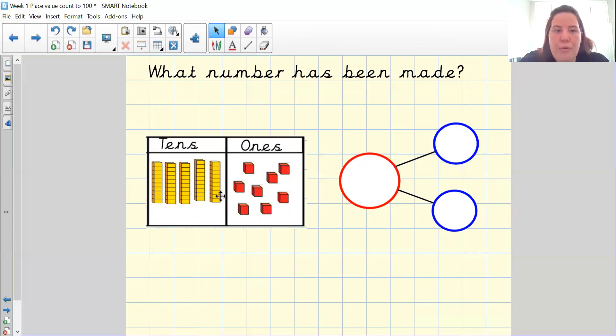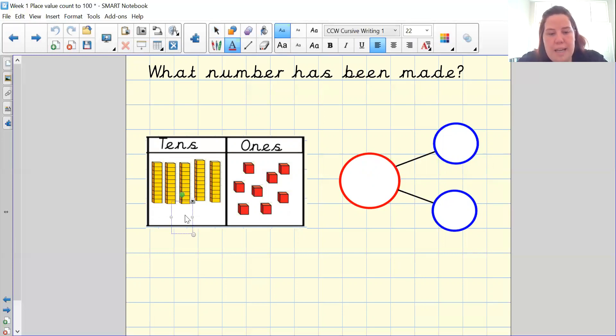So how many tens have I got? One, two, three, four, five. So I have five tens, which is the same as saying 50. So I'm going to put 50 into my first part and I'm going to add how many ones. Let's have a look.